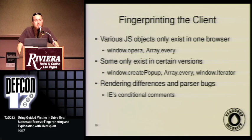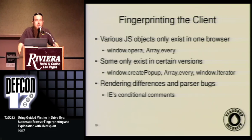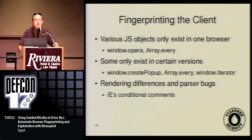For figuring out what the client is, we've got a number of JavaScript objects that only exist in a given browser. For example, window.opera only exists in Opera — who would make something called window.opera if you weren't Opera? Array.every only exists in Firefox. And some of these things only exist in certain versions. window.createPopup only exists in IE 5.5 and newer. Array.every only exists in Firefox 1.5 and newer.